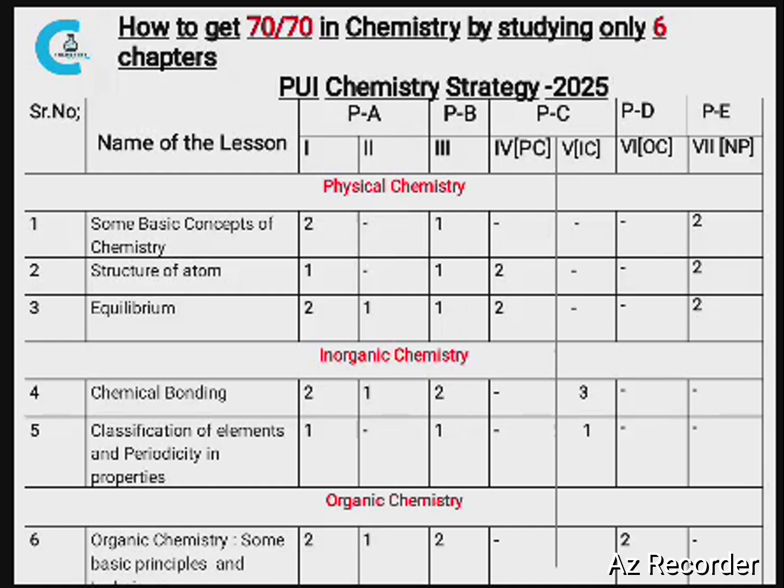For Part D — only organic chemistry — you have to answer 2 questions, and both can be answered from GOC alone, giving you 5 questions to choose from. For Part E (numerical problems), you answer 3 questions: Some Basic Concepts of Chemistry (2 questions), Structure of Atom (2 questions), Equilibrium (2 questions) — giving 6 options, but you only need to answer 3.